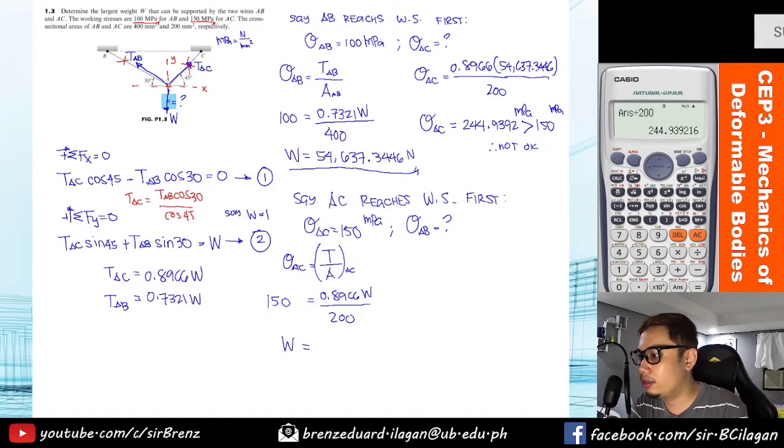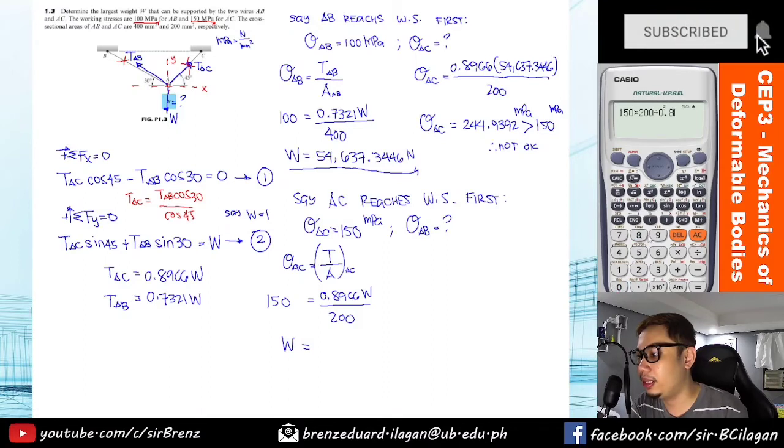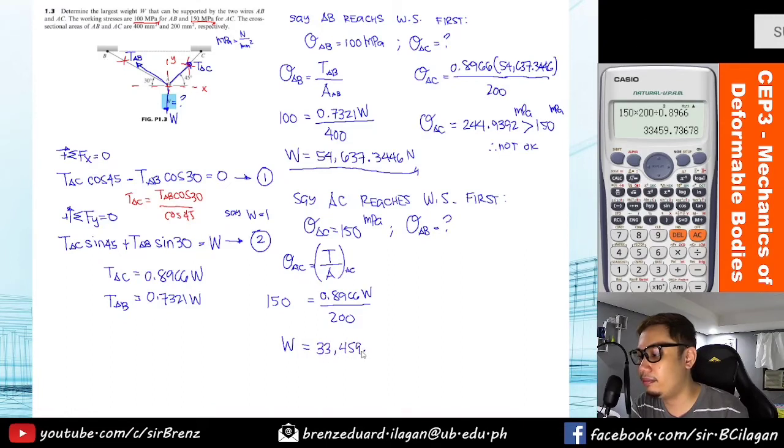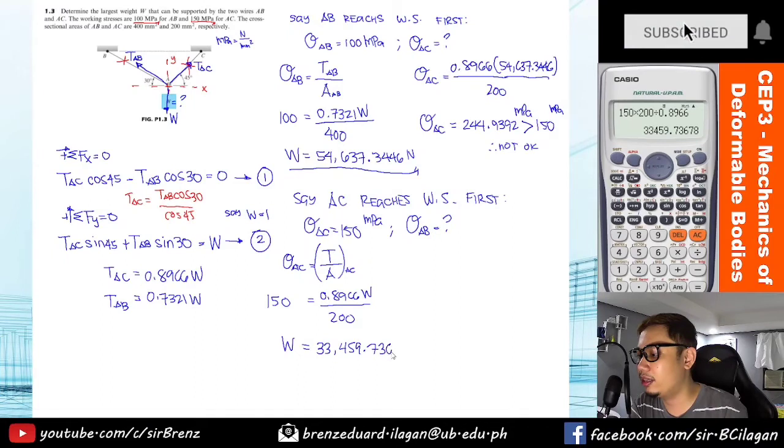Let's combine it here: tension in AC over area in AC. So that equals 150, and AC is 0.8966, so we get W all over the area of 200. So what will be W here? Calculator: 150 times 200 divided by 0.8966, so the answer is 33,459.7368 Newtons. So let's check it still.